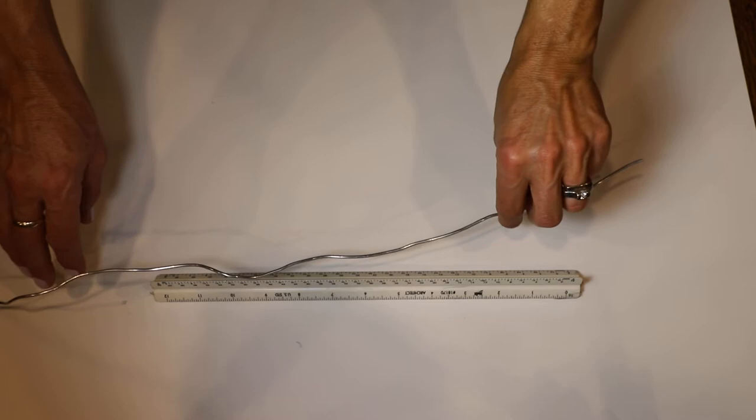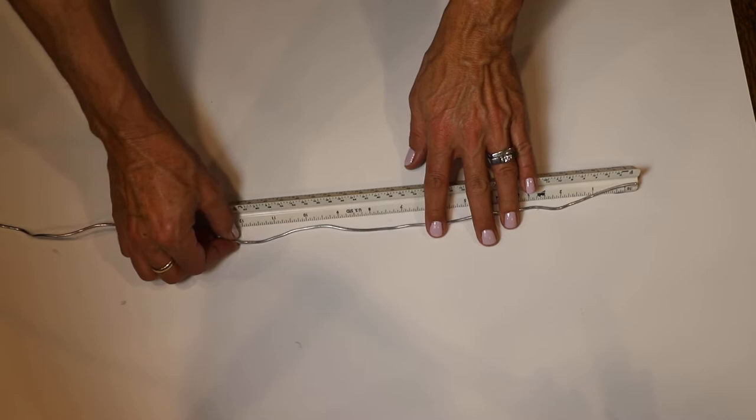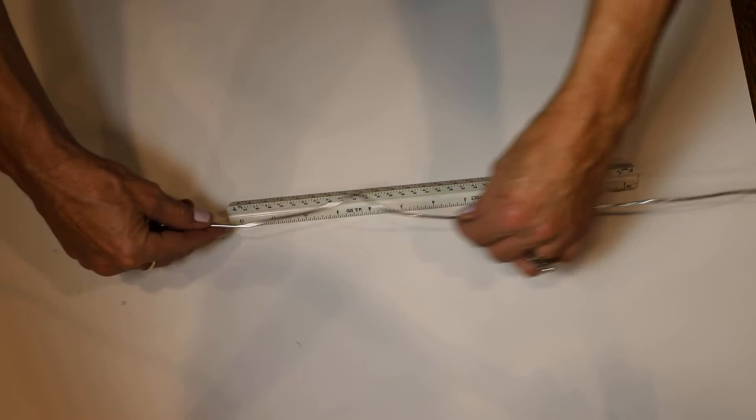Alright, I'm going to show you how to make a wire figure sculpture. So we're going to start with aluminum wire and with your ruler measure out five feet. So we have one foot, two, three, four, and five.